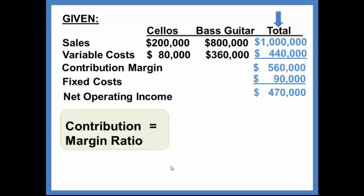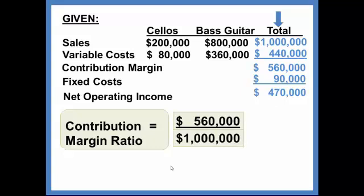Alright, the contribution margin ratio, you can see the contribution margin is $560,000. We would divide that by sales of $1,000,000. So this computes to be a 56% contribution margin ratio. Alright, we will use that to find our breakeven.